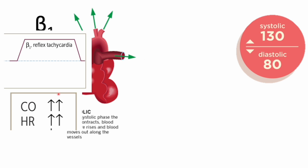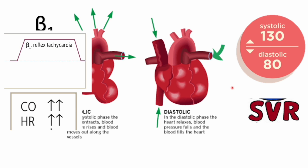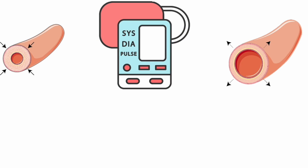Systolic blood pressure goes hand-in-hand with cardiac output, and the factors that affect it are heart rate and contractility. On the other hand, diastolic blood pressure is primarily affected by systemic vascular resistance or total peripheral resistance. So whatever raises systemic vascular resistance will elevate diastolic blood pressure and vice versa. Those two curves go hand-in-hand — that of diastolic blood pressure and systemic vascular resistance.